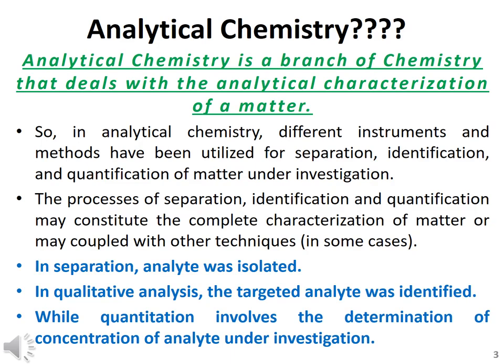Before starting classical analytical methods, let us discuss what analytical chemistry is. Analytical chemistry is a branch of chemistry that deals with the analytical characterization of matter. Any sample you are holding in a lab that needs characterization is analyzed through different analytical methods. This branch of science has been utilized for separation, identification, and quantification of targeted analyte in the given sample under investigation.